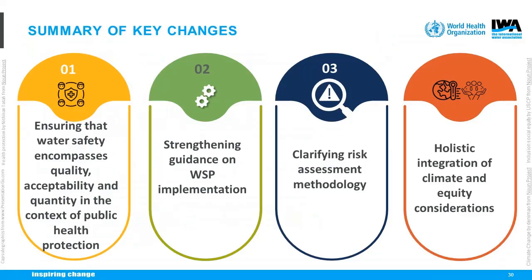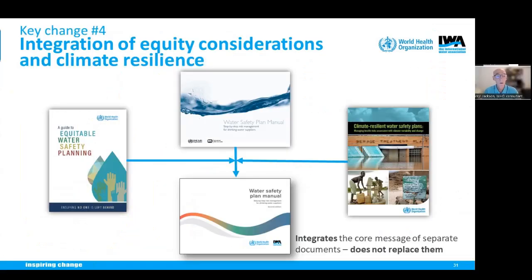The fourth key change is the integration of climate and equity considerations within the guidance. Since the first edition, WHO published supplementary guidance — the Guide to Equitable Water Safety Planning and Climate Resilient WSPs. It's important to convey that these elements are not bolt-on or optional, nor are they separate activities from core water safety planning. The second edition has streamlined these considerations into the guidance to help ensure more resilient drinking water supplies for the full diversity of system users, while still clearly signposting the original supplementary documents for more detailed information.